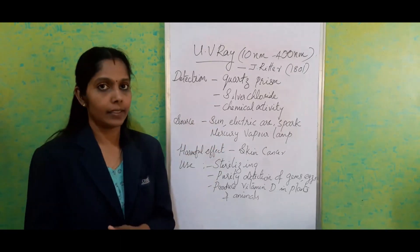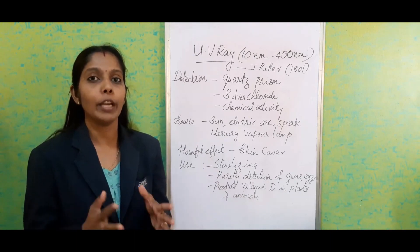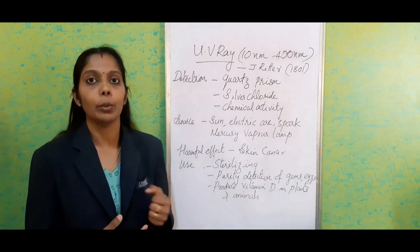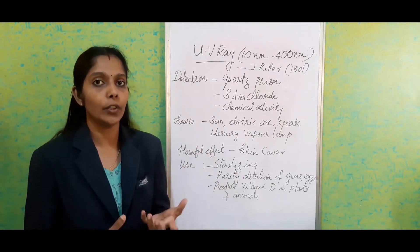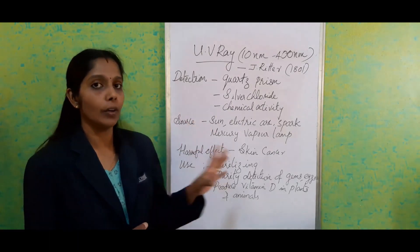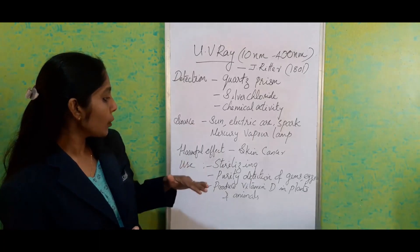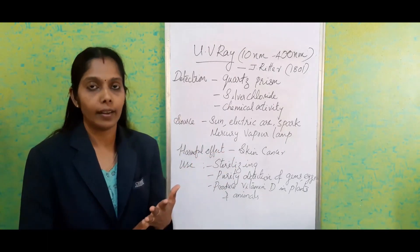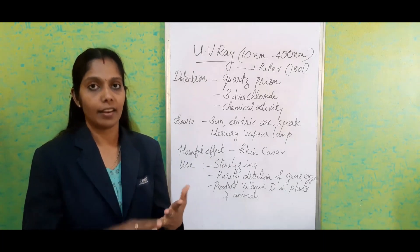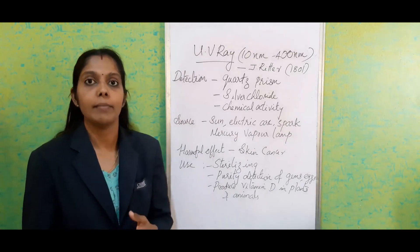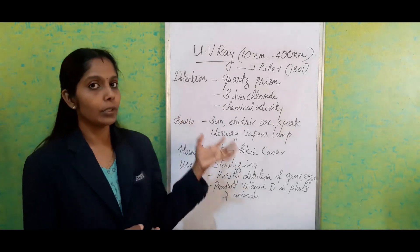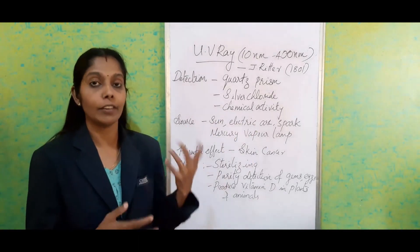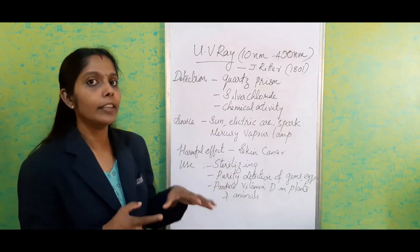Regarding harmful effects: doctors everywhere warn not to be too exposed to the sun. With ozone layer depletion, more ultraviolet rays are reaching Earth, and prolonged exposure can cause skin cancer. Ultraviolet radiation is the reason for skin cancer. As for properties, UV shares common electromagnetic wave properties: no medium needed for propagation, it shows refraction and reflection, is unaffected by electric and magnetic fields, it's a transverse wave, detectable via quartz prism, shows fluorescence, and affects photographic film.